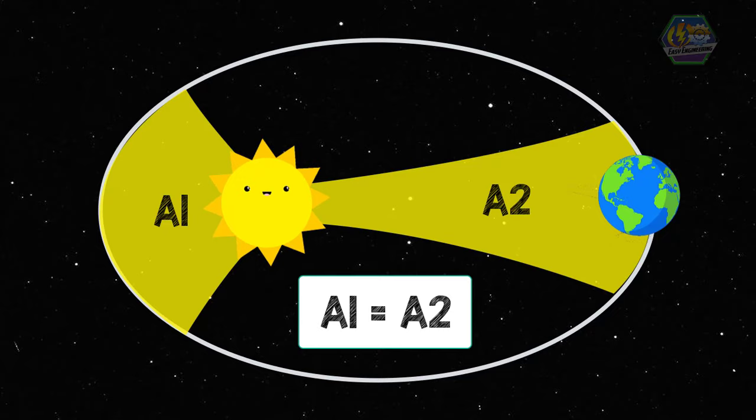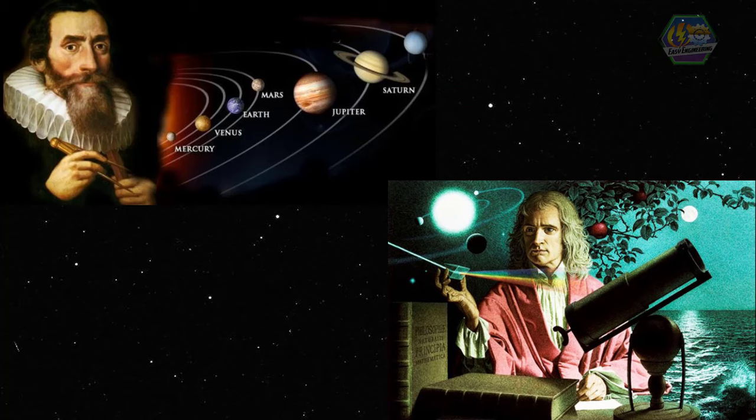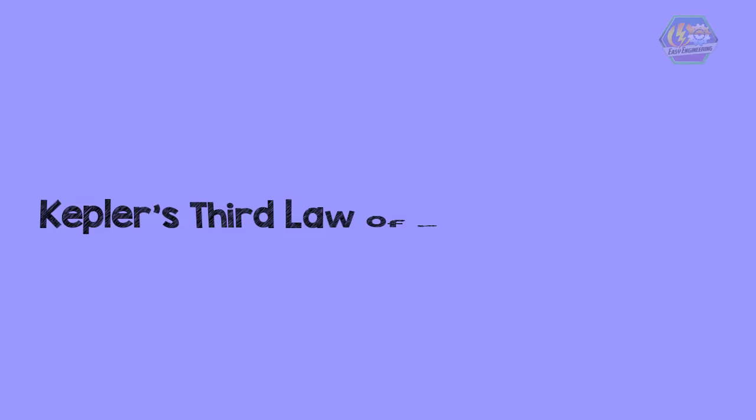Did you know that the knowledge of Kepler's second law proved important to Newton's law of gravitation? Newton showed that the motion of bodies subject to central gravitational force does not always follow the elliptical orbits specified in Kepler's first law, but instead planets or other heavenly bodies can take paths defined by other open conic curves. Amazing, right?